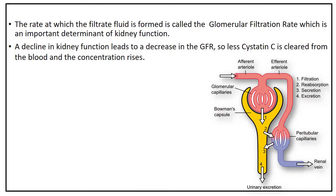The rate at which the filtrate fluid is formed is called the glomerular filtration rate (GFR), which is an important determinant of kidney function. A decline in kidney function leads to a decrease in the GFR, so less Cystatin C is cleared from the blood and the concentration rises.